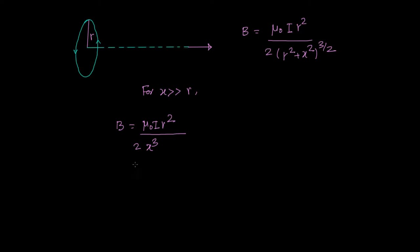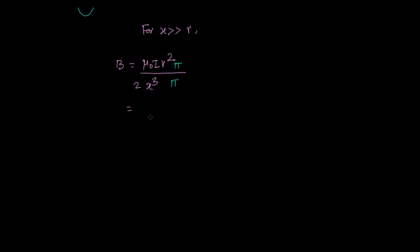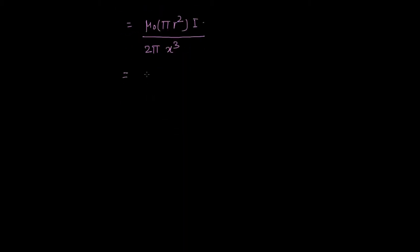Now if I multiply by pi in the numerator and the denominator, I get B becoming mu naught into pi r squared into i, upon 2 pi x cubed. That is equal to mu naught into i into A, because area of the loop is pi r squared.